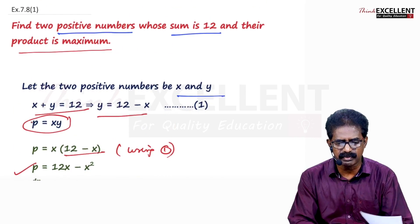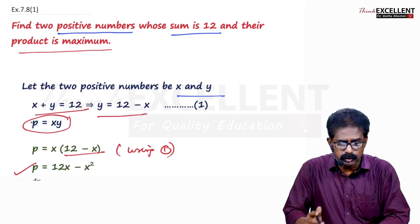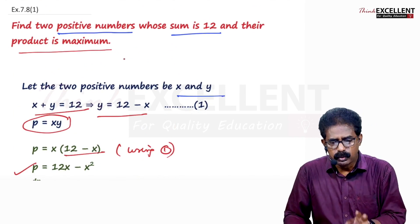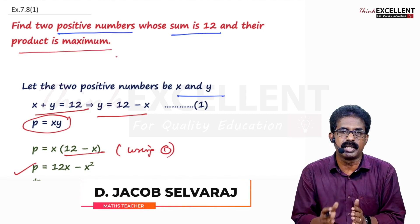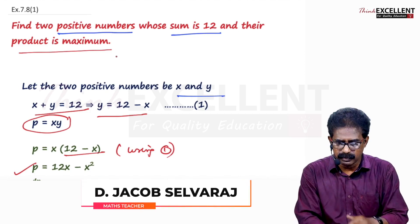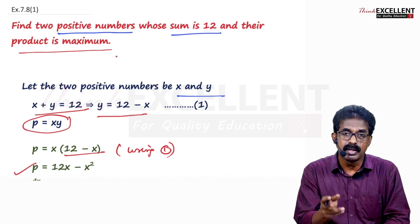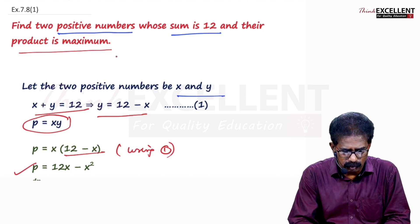So read the question very carefully. What is given? What we have to find. That is very important. Find two positive numbers. Take the numbers as X and Y. Whose sum is 12? That is given. X plus Y equal to 12. You can find one letter. And the product is maximum. Product means X into Y. We have to prove the product is maximum. Such a way you find X and Y.